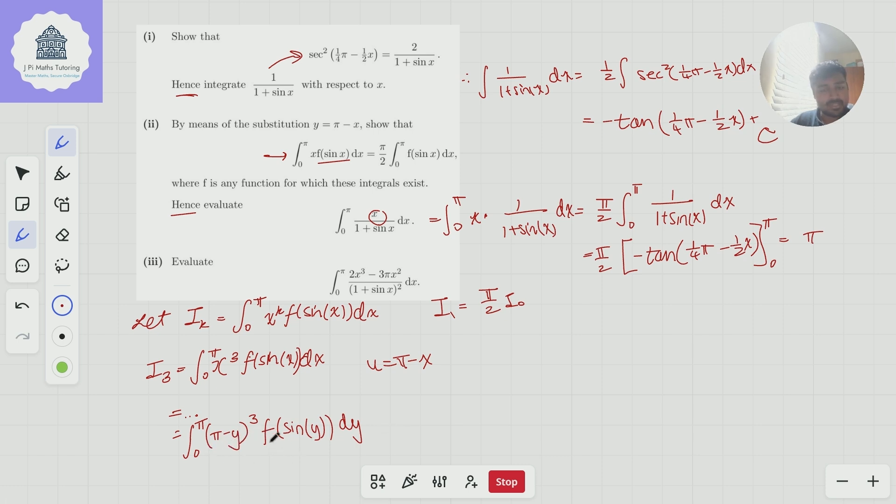And now the beauty of this is I can use the binomial expansion to expand pi minus y cubed. And if I think about what I'll get, I'm going to get π cubed times i₀ minus 3π squared times i₁ plus 3π times i₂ minus i₃. So that's just from expanding this and then splitting this into four different integrals. And this is all equal to i₃.